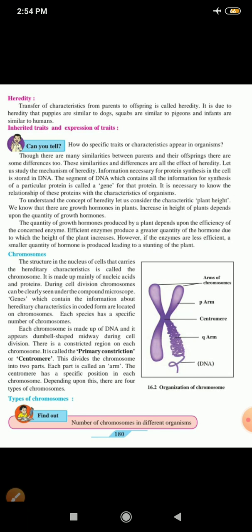Information necessary for protein synthesis in the cell is stored in the DNA. The segment of DNA which contains all the information for the synthesis of a particular protein is called the gene for that protein. So, the gene is very important. It is necessary to know the relationship of these proteins with the characteristics of organisms.